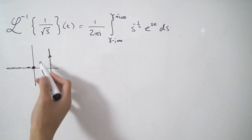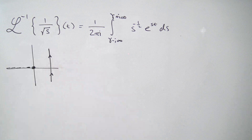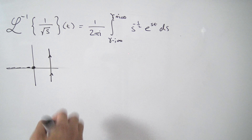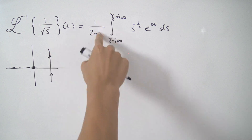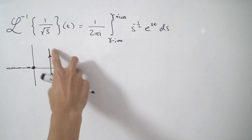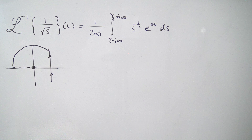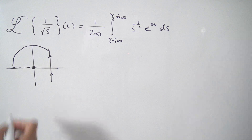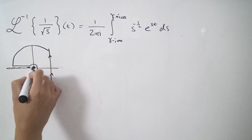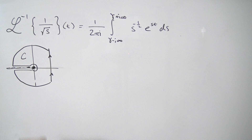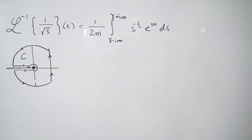Usually we'd just complete this with the Bromwich contour — a circle going all the way around — and use the residue theorem if there are poles inside. However, we have a branch cut, which is problematic because we can't cut straight through. So we construct a contour that goes up and around, does a detour around the branch cut, circles around zero, comes back out, and completes from there. The nice thing about this contour C is that it's holomorphic everywhere inside its domain, which means by Cauchy's integral theorem the integral over C is equal to 0.